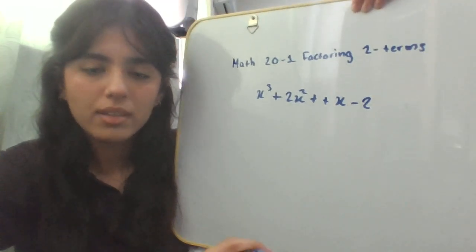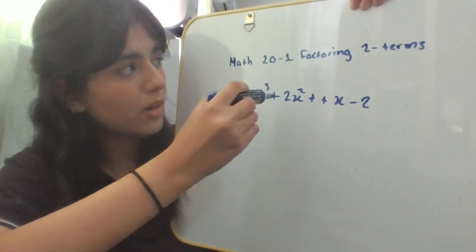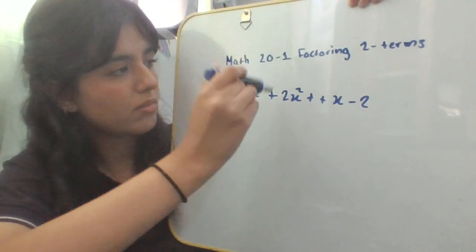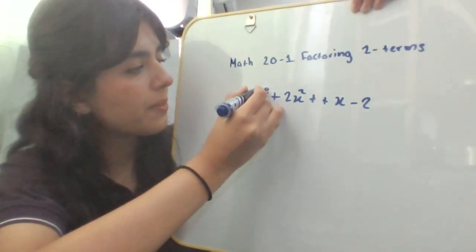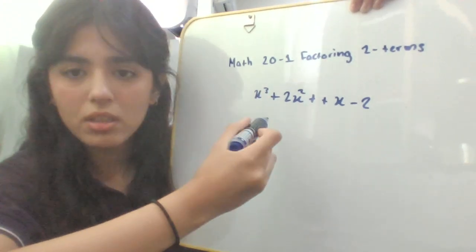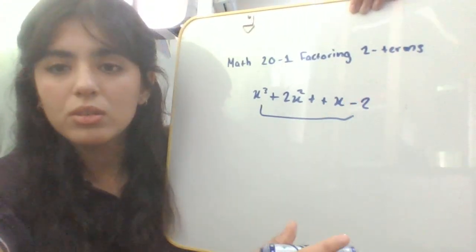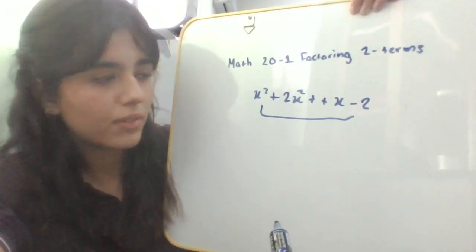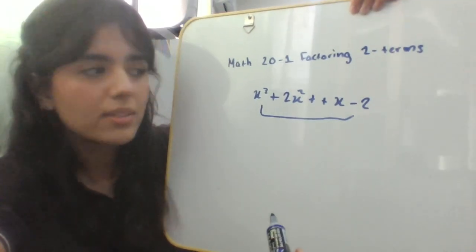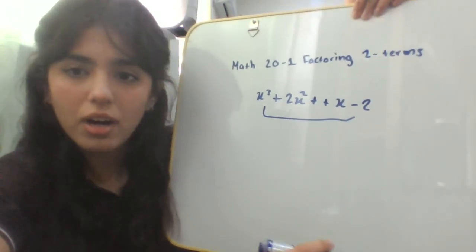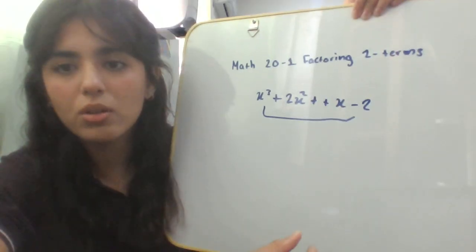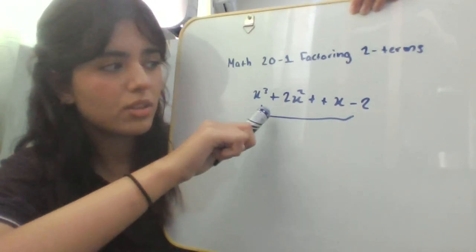One more thing to mention is that for factoring a polynomial with four terms, you'll need to do something called synthetic division first, and I'll teach that in my next video. But for now, I taught you guys two terms and three terms. For the next video, I'll do factoring four terms.